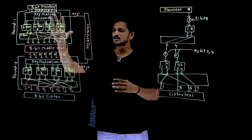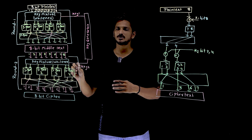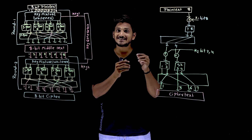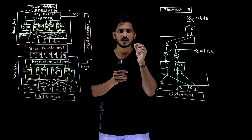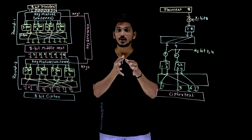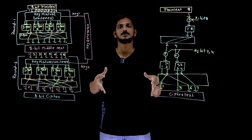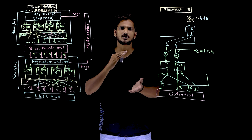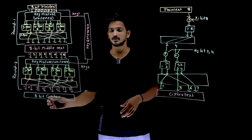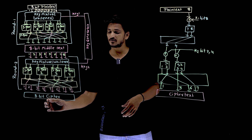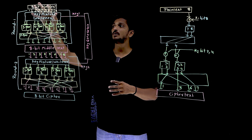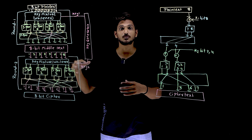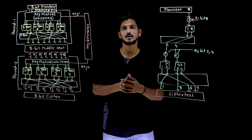This is the design which we discussed in our last class. From this design, what does diffusion mean? Diffusion means if there is a change in a single bit in the plain text, it is going to affect multiple bits in the cipher text. That is what diffusion means. The opposite way around — one bit in the cipher text is going to be affected by multiple bits in the plain text. So how does this design provide that? Let's try to understand this.